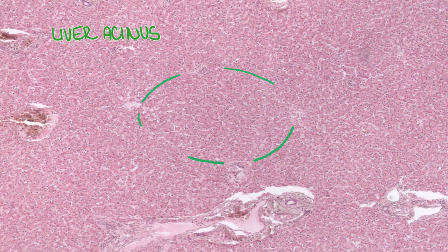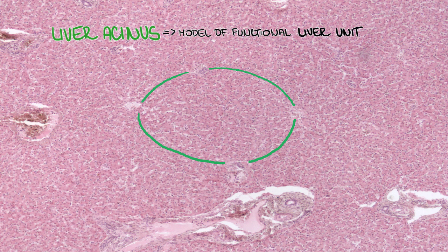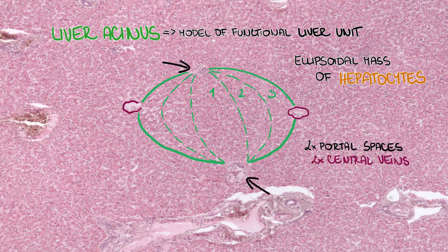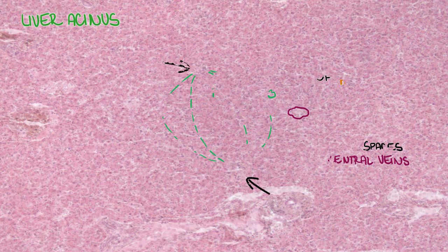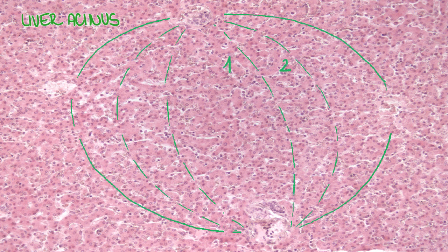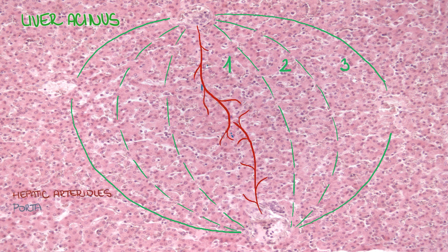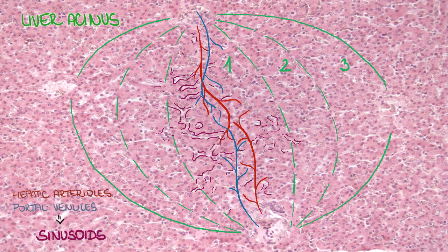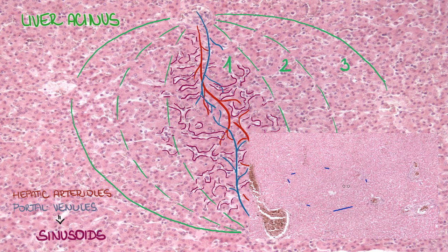The liver acinus can serve as a suitable model of a functional liver unit as well. It consists of an irregularly shaped, roughly ellipsoidal mass of hepatocytes joining two portal spaces and two central veins. The liver acinus is even more relevant to hepatic function, since it contains hepatocytes lined around hepatic arterioles and portal venules just as they anastomose in the sinusoid. However, the structure of the liver lobule is more straightforward and understandable, and therefore our videos are based on this unit.